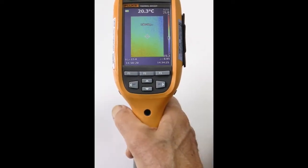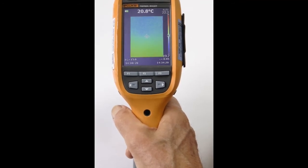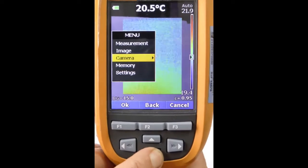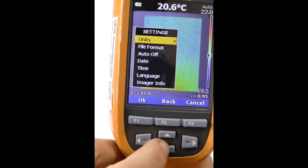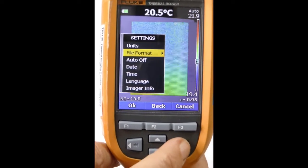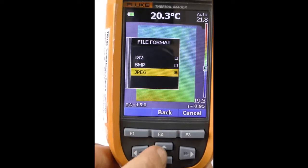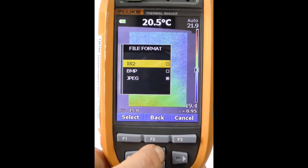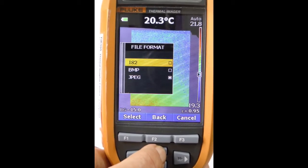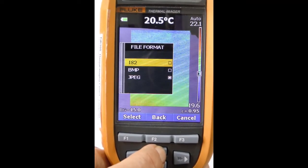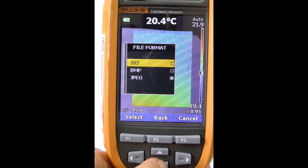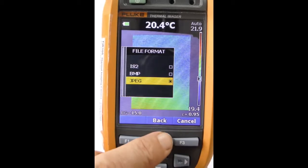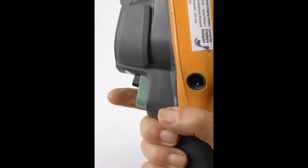Before we start we need to use the menus to check the file format of the saved images. We call up the menus, go to settings down the bottom, go to the right and check file format. You'll see these choices. At the moment it's on JPEG which is good, the normal imaging format. BMP is another that's okay but don't use this IS2 format, a special Fluke format only for use if you're using their SmartView software. Just check it's in JPEG and leave it there, then exit the menu by pulling the green trigger button.